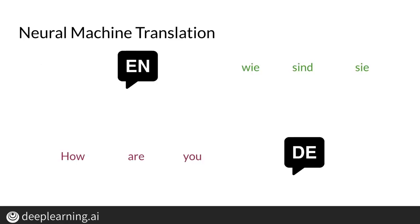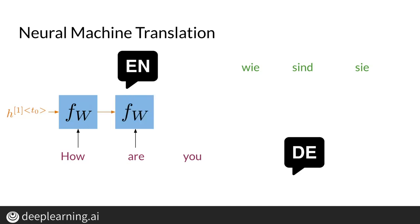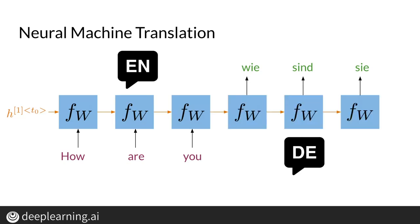In neural machine translation, you use a neural network architecture to translate from one language to another. In this example, we're going to translate from English to German. Using an RNN, you have to take sequential steps to encode your input, and you start from the beginning of your input, making computations at every step, until you reach the end. At that point, you decode the information following a similar sequential procedure.